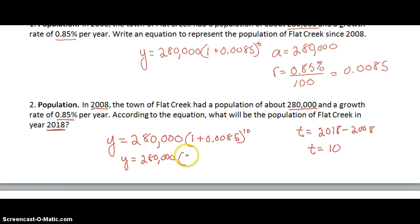I'm going to add the 1 and the 0.0085, 1.0085 to the 10th power. And then we can use our calculator to multiply each of these out and we will get our final answer of 304,731. So our final answer is going to be according to the equation the population of Flat Creek will be about 304,731 in the year 2018.